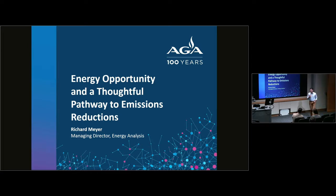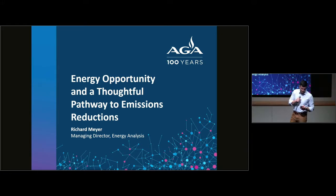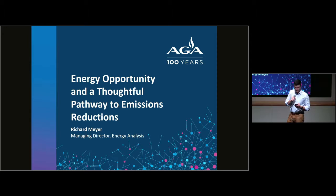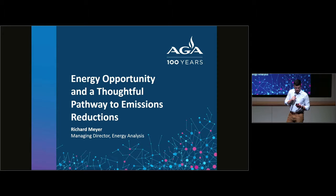For the last energy symposium speaker we have Richard Meyer from the American Gas Association. Richard serves as the managing director of the energy group at AGA, which represents more than 200 local energy companies that deliver natural gas throughout the U.S. His responsibilities include policy and economic analysis covering natural gas supply and demand, residential and large volume markets, greenhouse gas emissions, climate-related policy, and distributed generation like combined heat and power. Before AGA, Richard was with ICF's fuels and technology group. He has an MA in global and environmental politics from American University and an MS in physics from California Polytech.